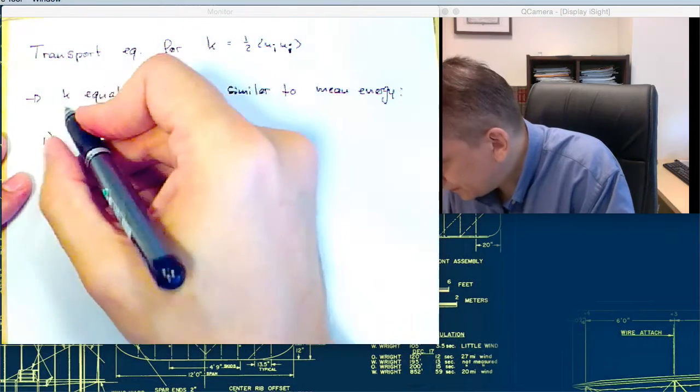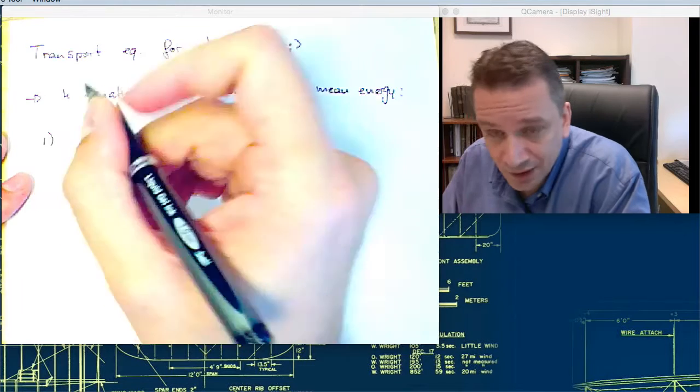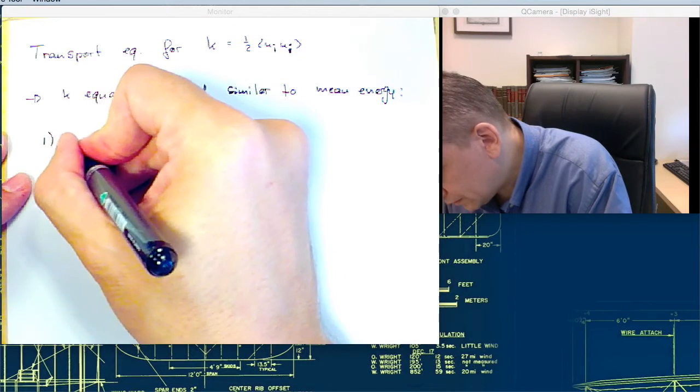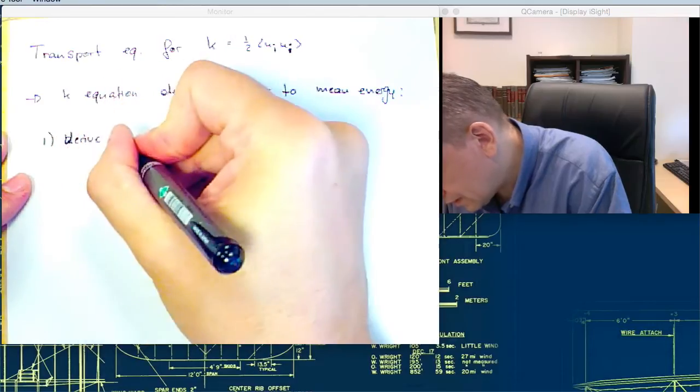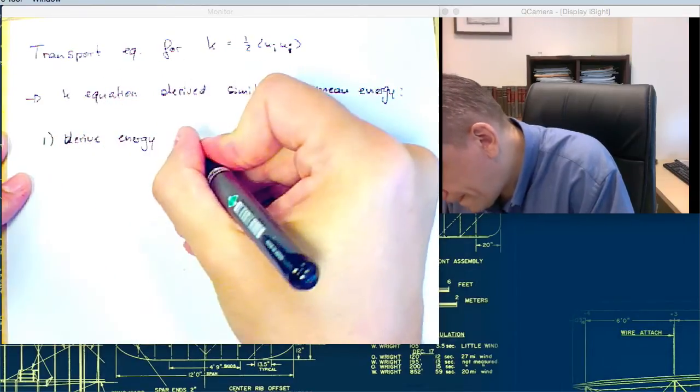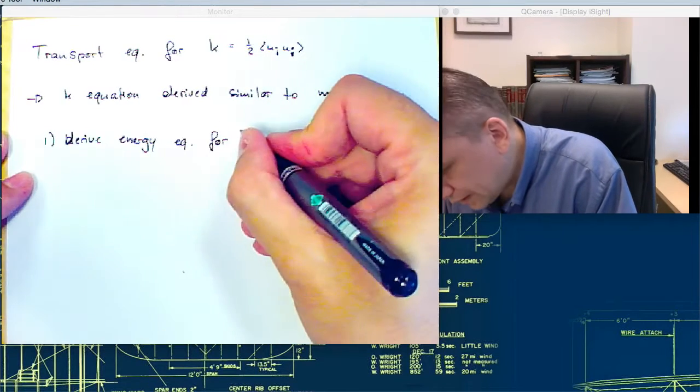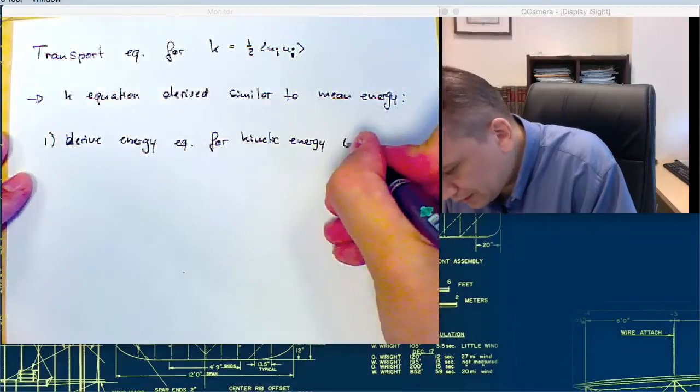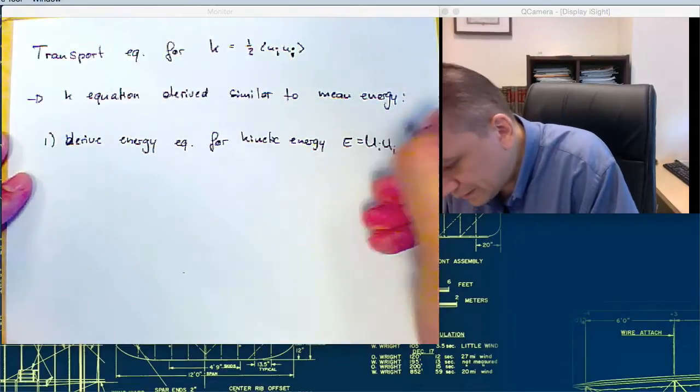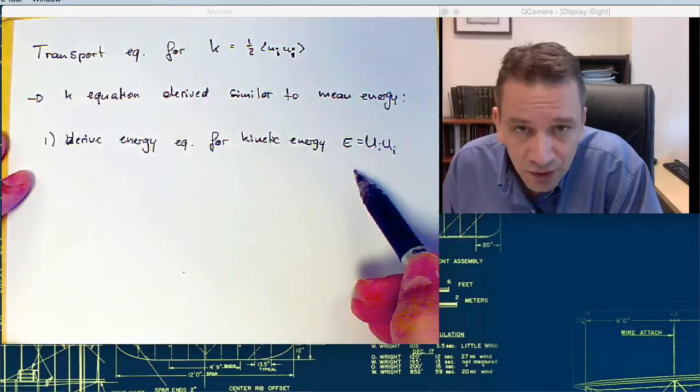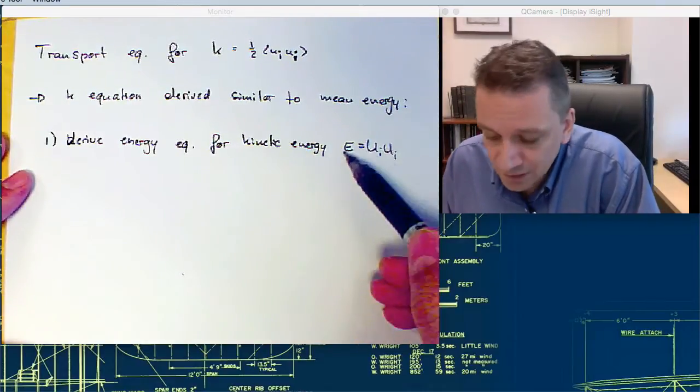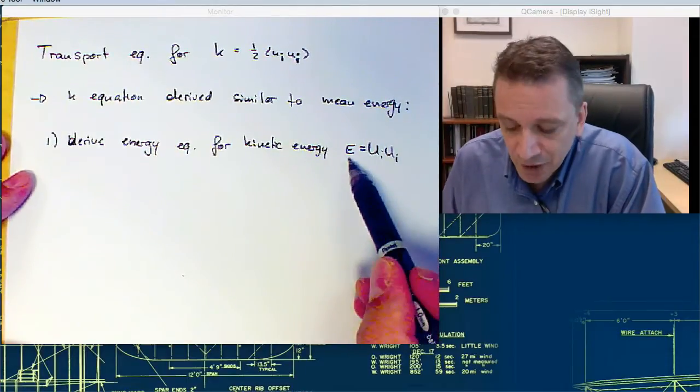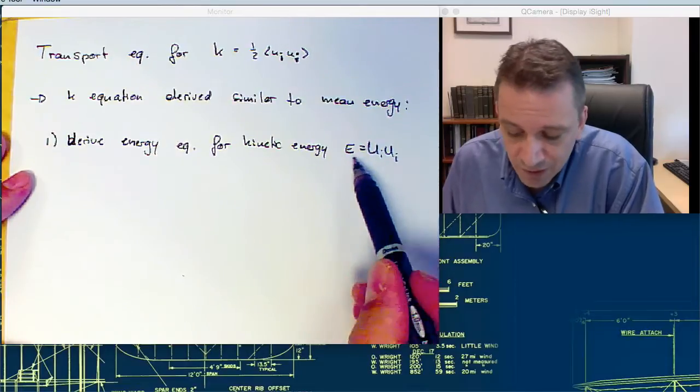So first, we are defining a transport equation for the kinetic energy, for E, which is ui ui. So again, this energy is the total energy, the mean flow field plus the turbulent kinetic energy. Before, in the previous lectures, we have derived an equation for the mean flow part only, where we have averaged these terms.